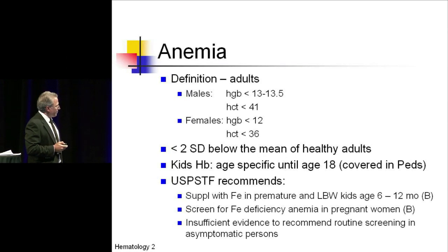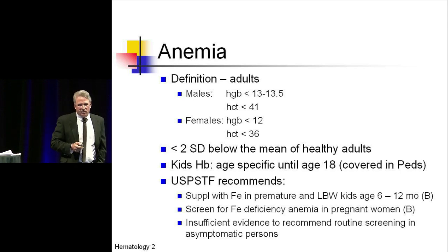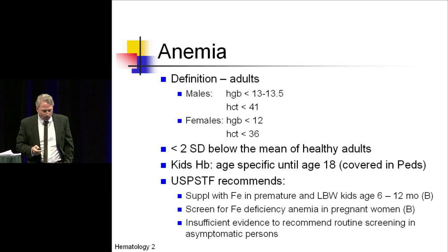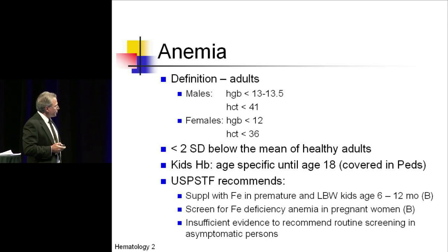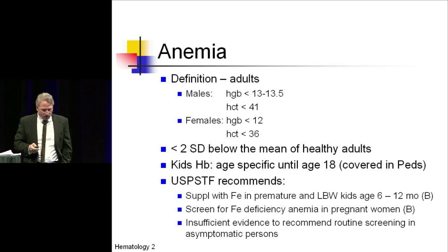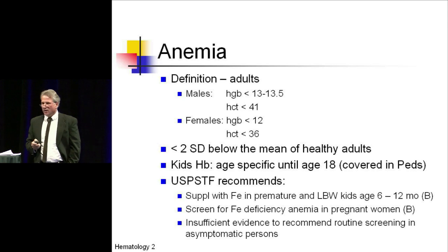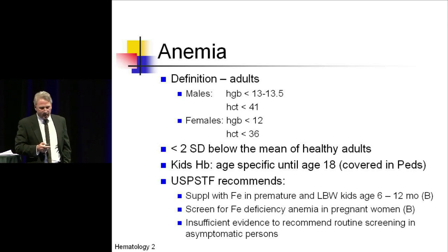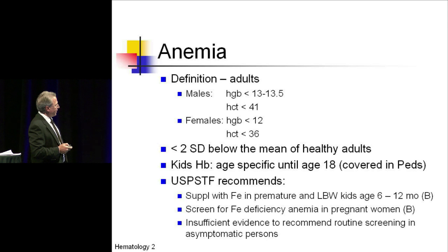The U.S. Preventive Services does pipe in with a couple of recommendations related to iron deficiency. The first is to supplement iron in premature and low birth weight children between the ages of 6 and 12 months. The second is to screen pregnant women for iron deficiency. They go on to say there's insufficient evidence for routine screening in otherwise asymptomatic patients.